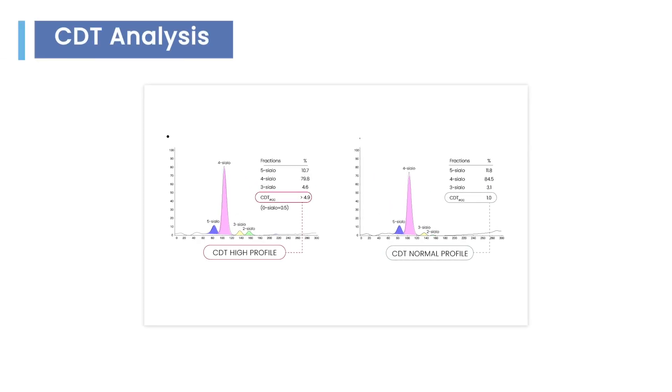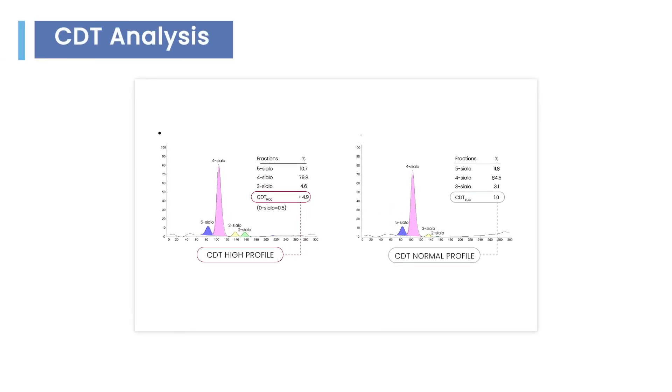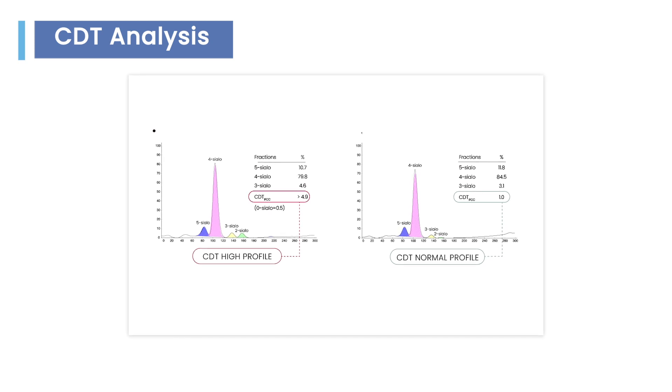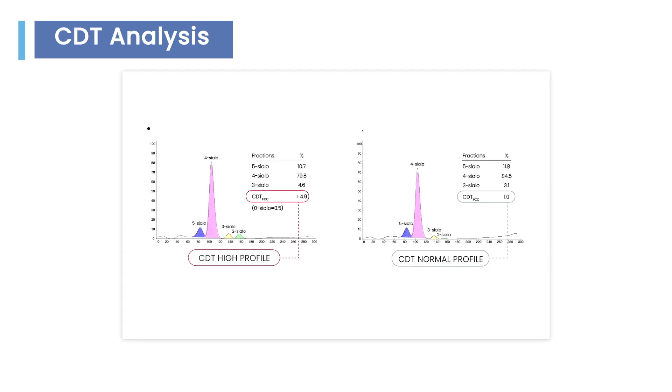During CDT analysis, serum transferrin isoforms are separated into five major fractions according to their sialylation level.